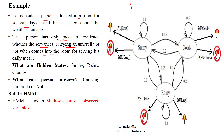That means the person inside the locked room does not know about the climate outside. He can only get his meal from a servant at the right time. If he wants to know the climate, he only has the evidence that during a rainy day the servant will come with an umbrella when bringing food. So if the servant is carrying the umbrella, there is the possibility of rain or cloudy weather. If not carrying the umbrella, there is the possibility of sunny weather.